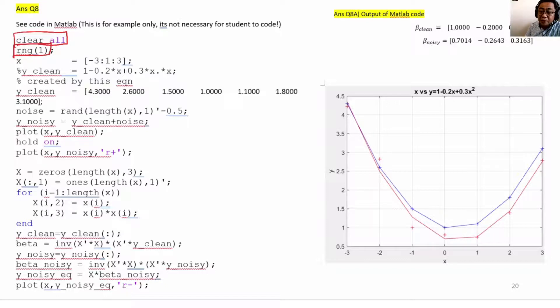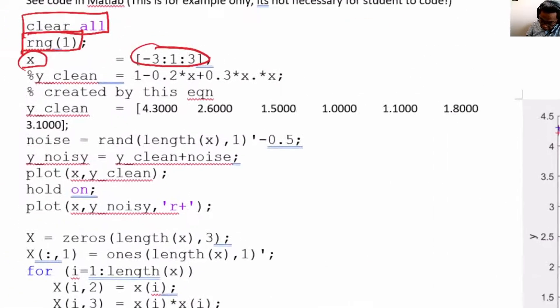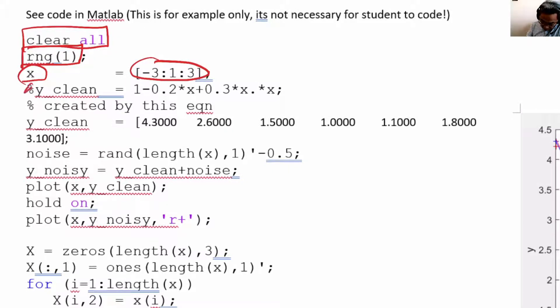We set x to be from minus three to plus three in steps of one. We evaluate y_clean using this equation. You will see that the x squared is here; 0.3 is the parameter for x squared.